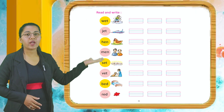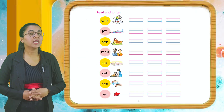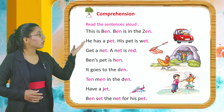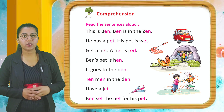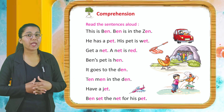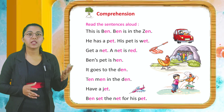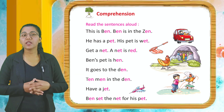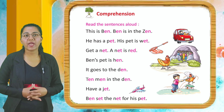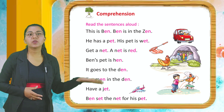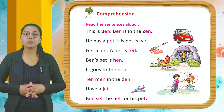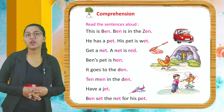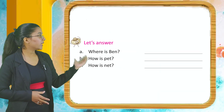Now next, read and write — you have to read then write in the given blank. Now we have comprehensions. Read the sentences aloud: This is Ben. Ben is in the den. He has a pet. His pet is wet. Get a net. A net is red. Ben's pet is hen. It goes to the den. Ten men in the den have a jet. Ben set the net for his pet.